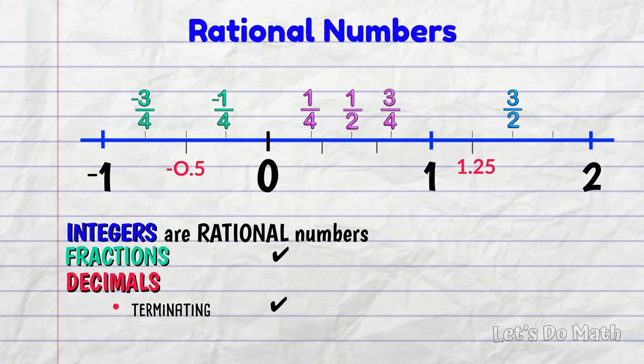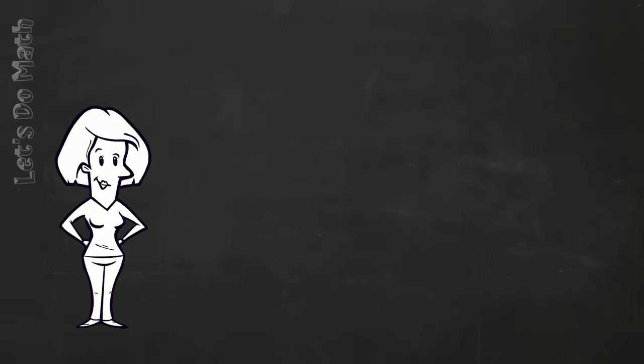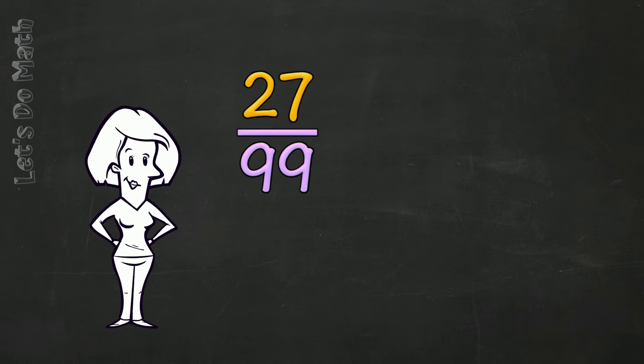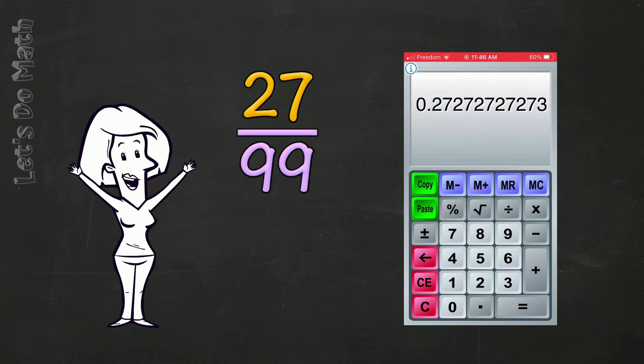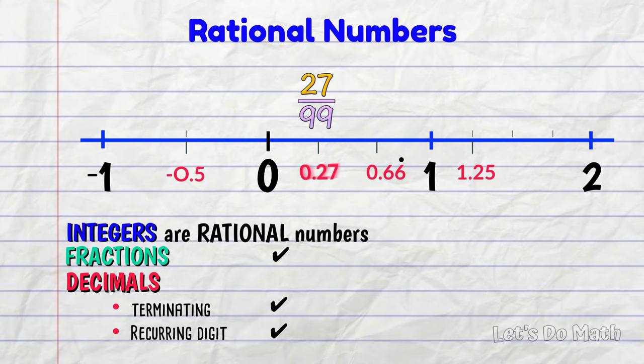In fact, if you have a decimal number with a recurring digit, it's also a rational number. And some fractions, for example, 27 over 99, when you put that into the calculator and get a decimal from it, you're going to get a repeating pattern or period! If you have a decimal number with a repeating period, that is also a rational number!